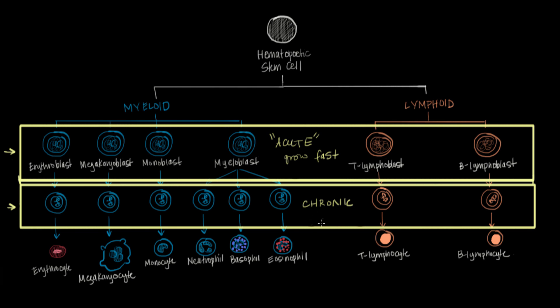Now, chronic leukemias, turns out, they grow very slowly. So, a patient with a chronic leukemia can sometimes go years without having any symptoms at all. So, it's a very chronic onset of disease.